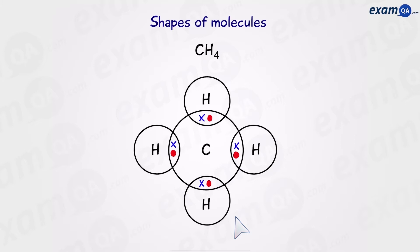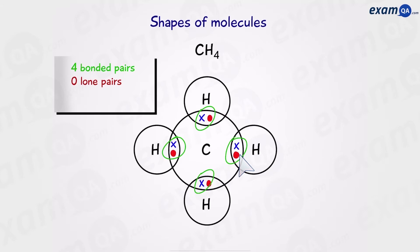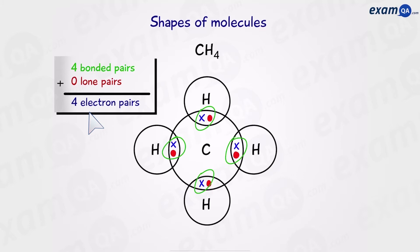We're going to practice identifying the number of electron pairs in the central atom. Starting with methane, we can see there are four bonded pairs of electrons around the central carbon atom — one, two, three, and four. There are no lone pairs, so in total there are four electron pairs in this molecule.